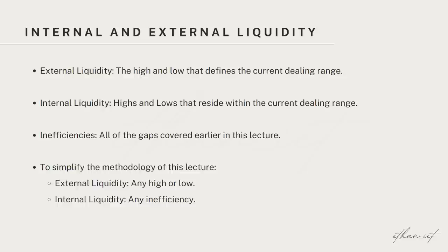When looking for internal and external range liquidity, we are really referring to the PD array matrix introduced by ICT. External range liquidity is the high and the low that defines the current dealing range, and internal range liquidity are highs and lows that reside within the current dealing range. Inefficiencies are all of the gaps covered earlier in this lecture — fair value gaps, liquidity voids, and volume imbalances. For simplification, I refer to external range liquidity as any high or low, and internal range liquidity as any inefficiency.